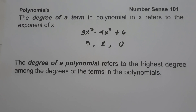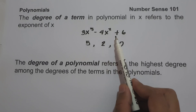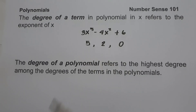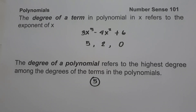The degree of a polynomial refers to the highest degree among the degrees of the terms in the polynomial. In the given trinomial 3x raised to 5 minus 4x squared plus 6, the first term has the highest degree of 5. Therefore, the degree of the polynomial is 5. Those are the basic concepts to remember when talking about polynomials.